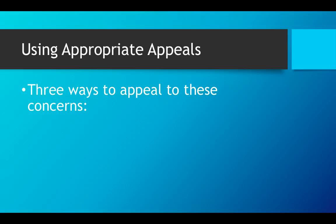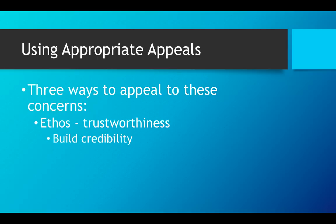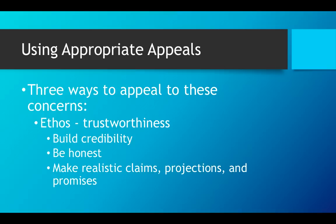There are three ways to appeal to your reader. The first is ethos — you have to establish trustworthiness with your reader. You want to appear credible, make realistic claims, projections, or promises depending on the direction your paper is going to go. You can't make a claim that is completely unrealistic. You want your reader to trust you; you're trying to persuade them to agree with you, so you need to appear trustworthy. That's ethos — you're ethical.